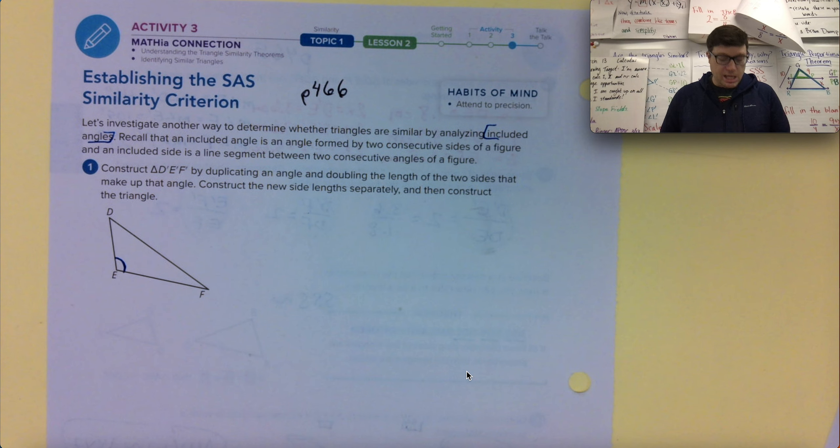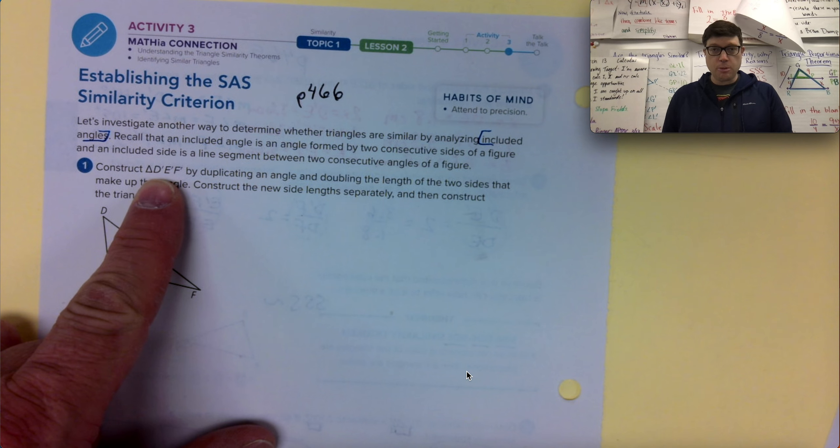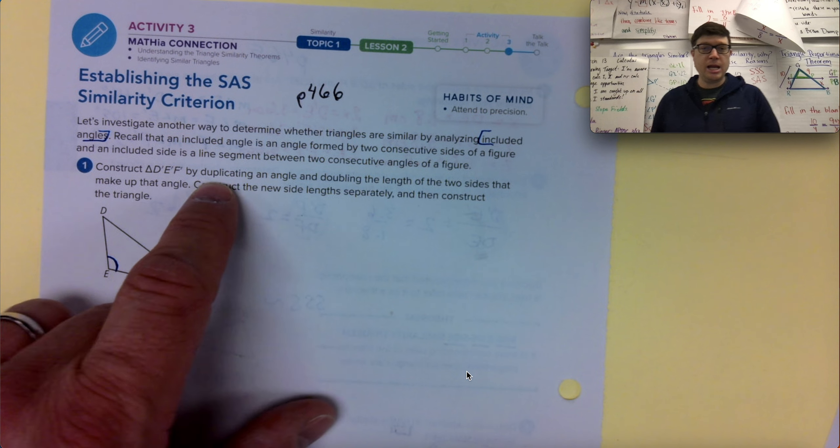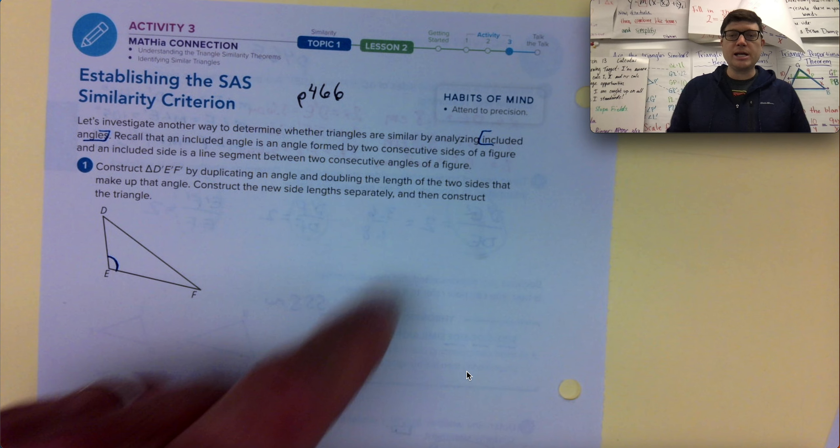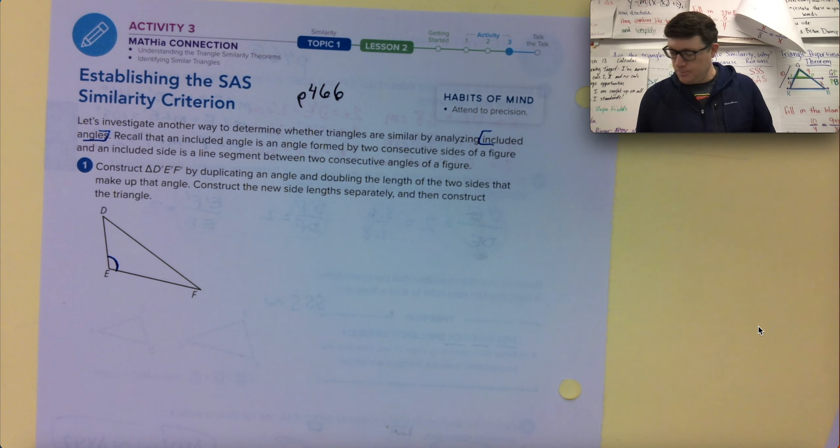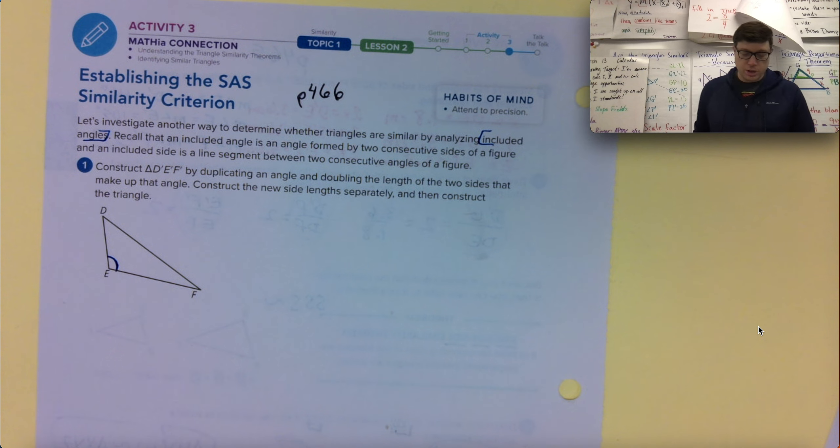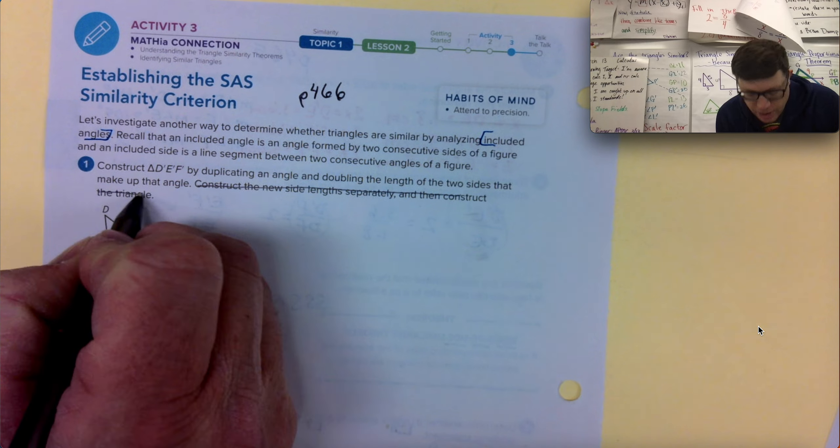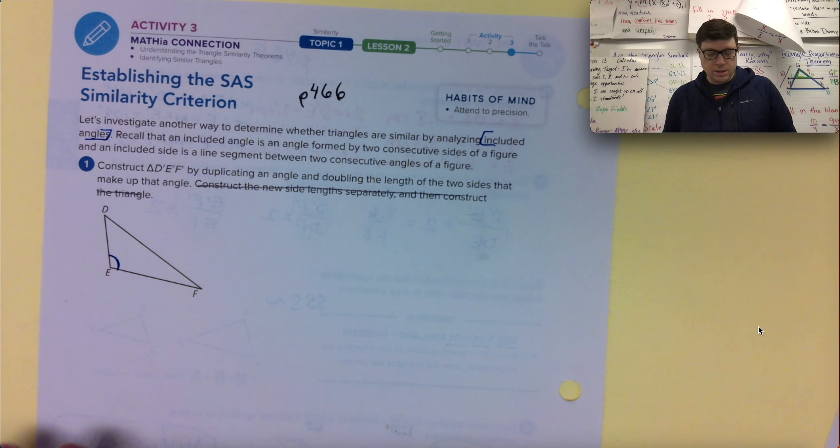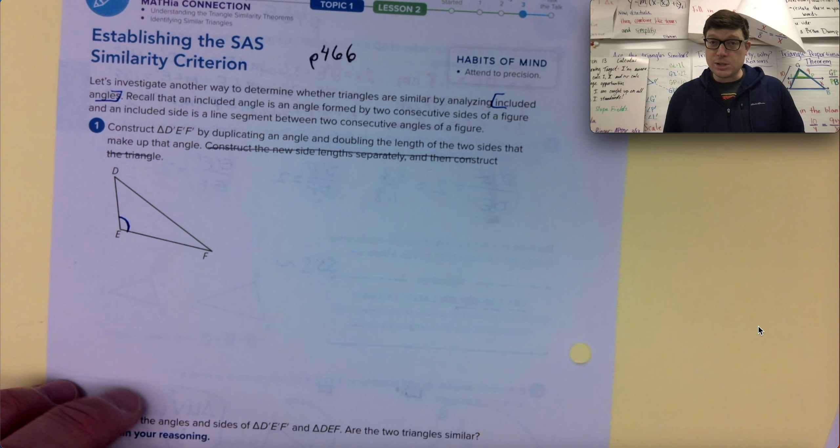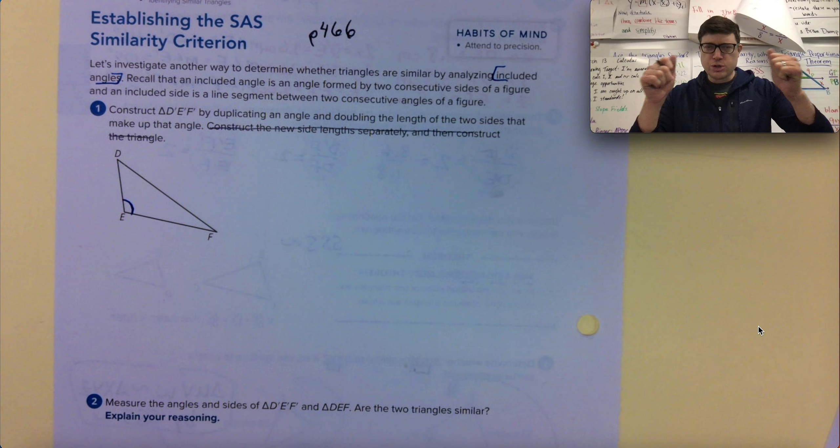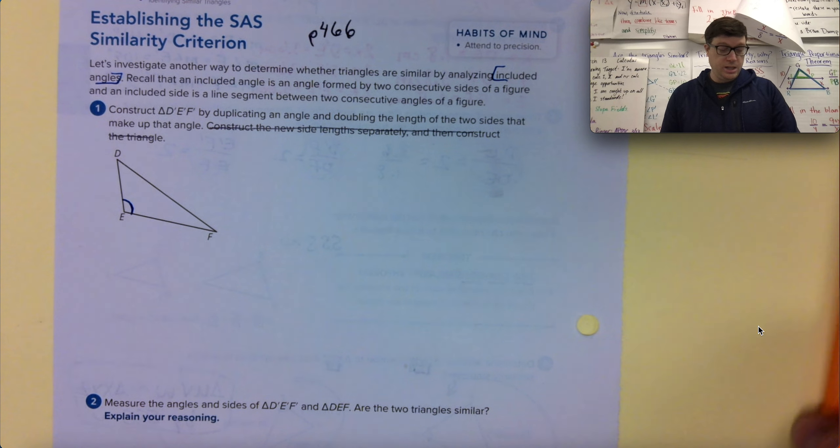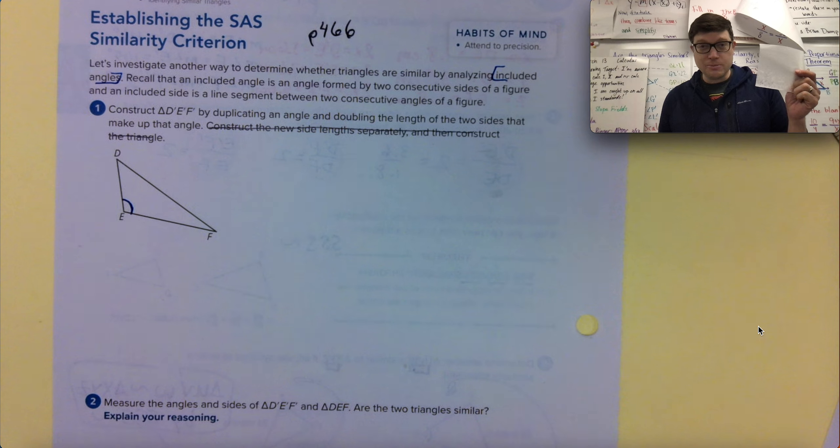Construct triangle D-prime, E-prime, F-prime by duplicating an angle and doubling the lengths of the sides that make up that angle. To be successful in that step, tracing paper. Construct the new side length separately and then construct the triangle. So I'm going to kind of ignore this sentence here. There is a requirement by our text to use compasses and straight edges like the geometry tools, but the ancients didn't have tracing paper.